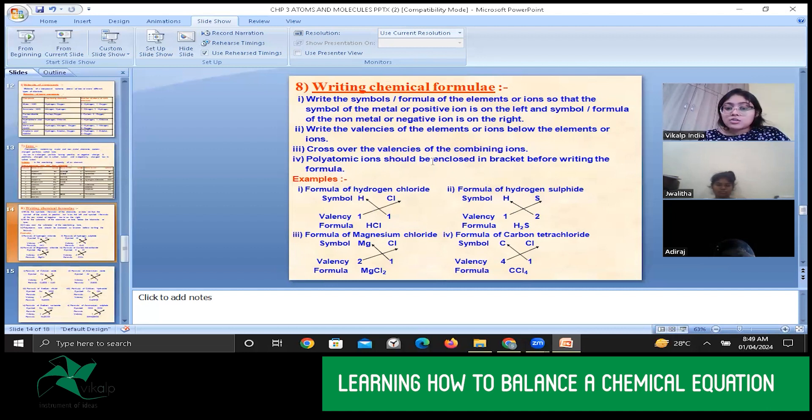Okay. Polyatomic ions should be enclosed in brackets before writing the formula. What are polyatomic ions? How, after how much number we call it as polyatomic, polyatomic ions? After four. Yes. Okay.